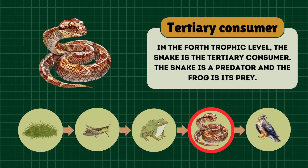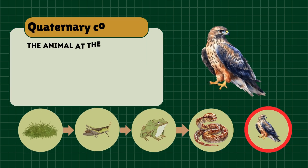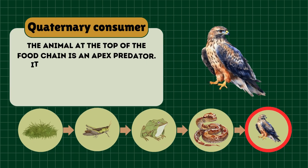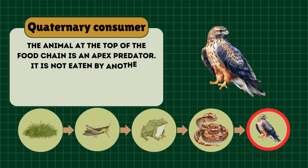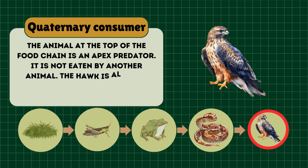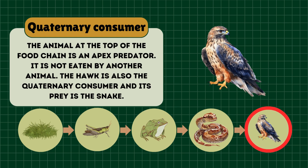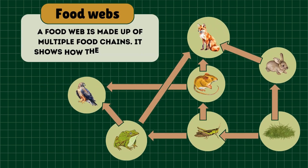In the fourth trophic level, the snake is the tertiary consumer. The snake is a predator and the frog is its prey. The animal at the top of the food chain is an apex predator — it is not eaten by another animal. The hawk is the quaternary consumer and its prey is the snake. A food web is made up of multiple food chains and shows how they interact.